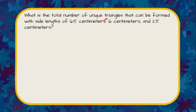What is the total number of unique triangles that can be formed with side lengths of six and a half centimeters, six centimeters, and two and a half centimeters?